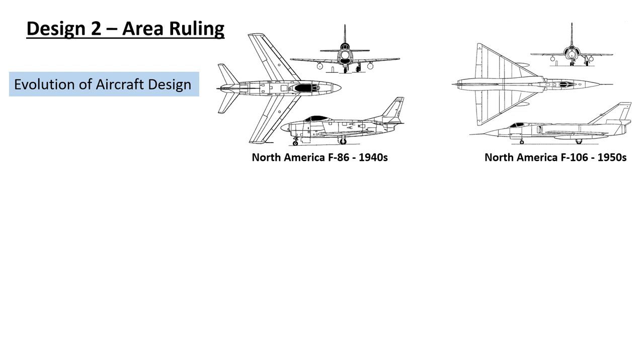Before we introduce the area ruling, we can see the evolution of aircraft design. The left one is North American F-86, and the right one is from the same manufacturer, F-106. Apart from the wing, if we focus on the fuselage, can we find the differences? The fuselage for the left one is quite straight. But for the second one, you can see there is a bit narrowing. One is in the middle and they expand slightly. So that's the difference.